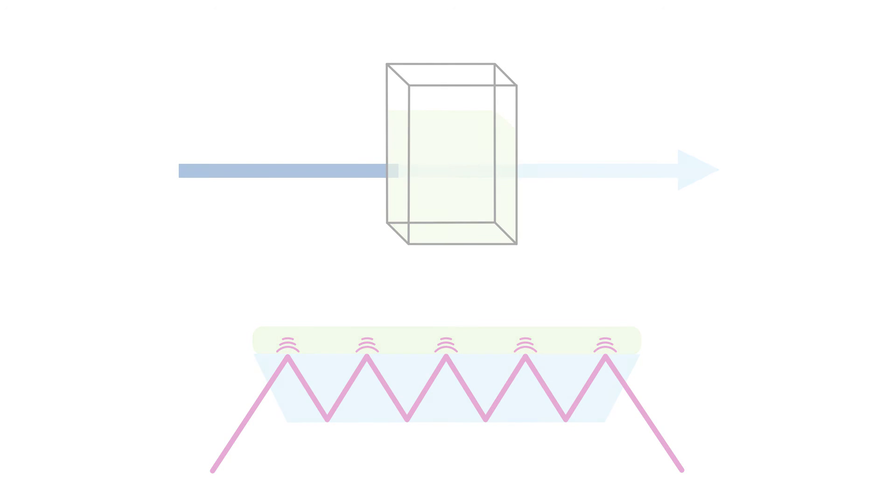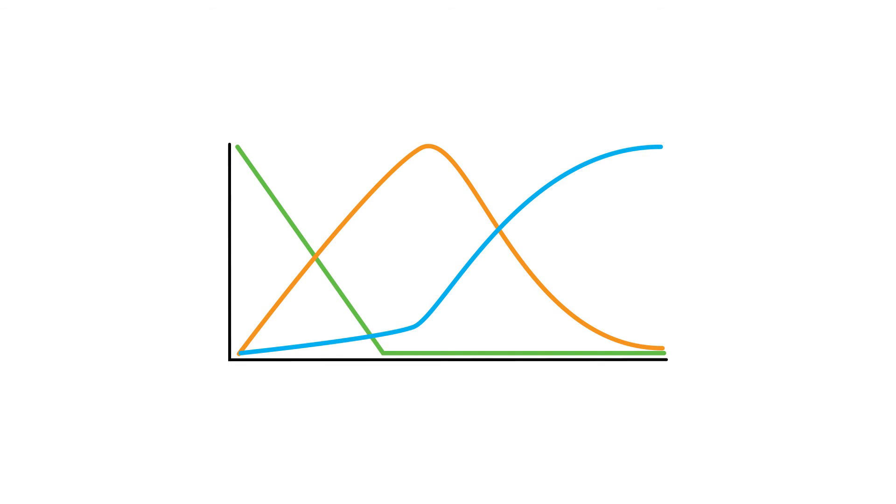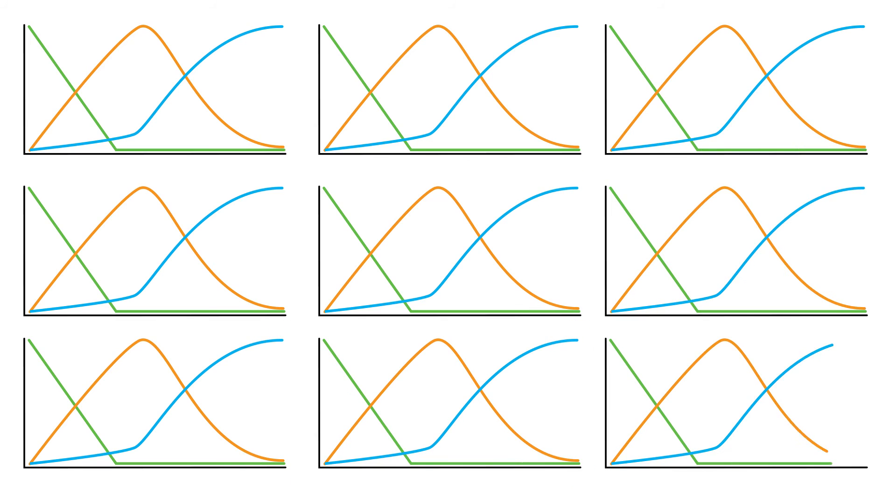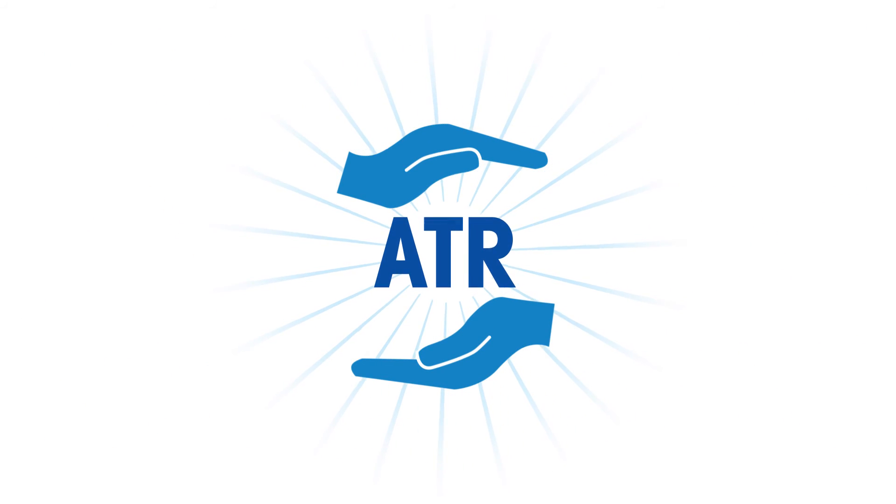Even with this variability, ATR makes for an amazingly consistent sampling technology, because these variables are always the same. This allows ATR to return consistent data results time after time, and accounts for the immense popularity of this sampling technology.